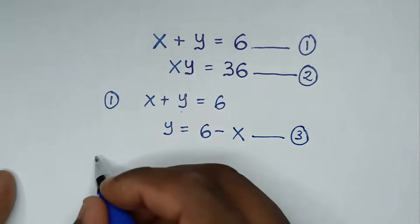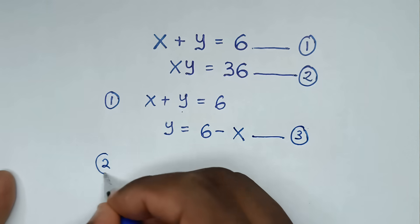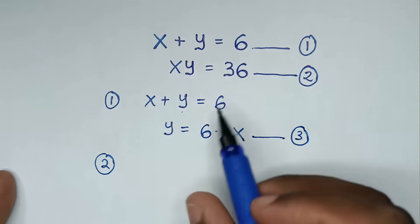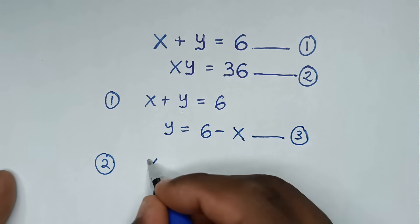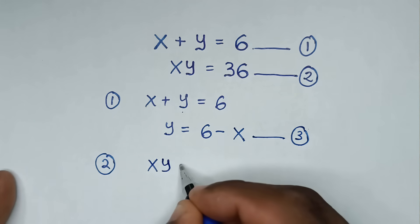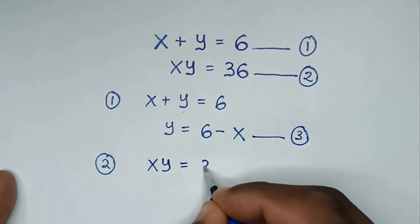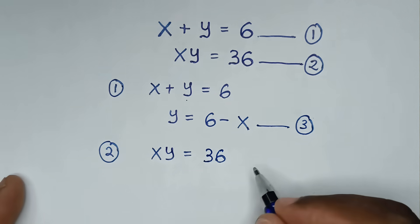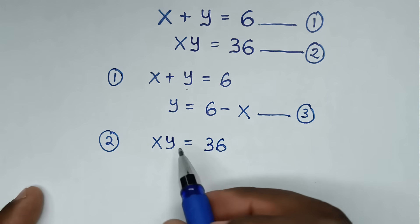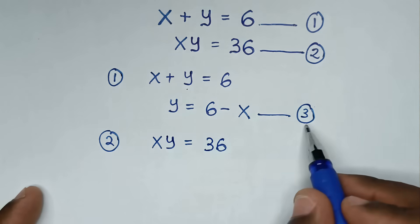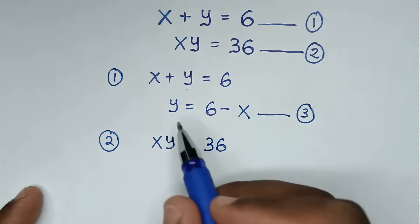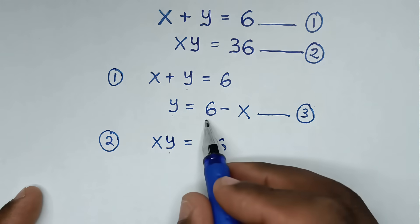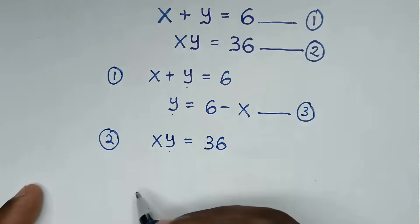Then from equation 2, which is x times y is equal to 36. We substitute equation 3 into y, substituting 6 minus x.